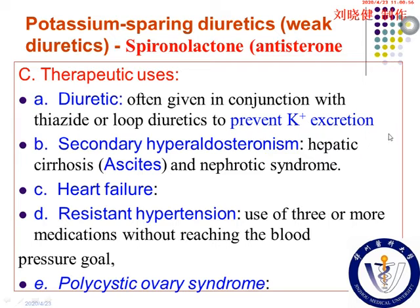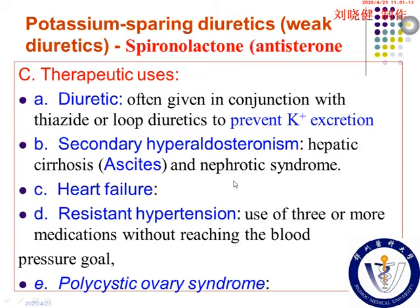It is often given in conjunction with thiazide diuretics or loop diuretics to prevent potassium excretion. This is a relatively common use. Second, it is also used for secondary hyperaldosteronism. For some patients with relatively high levels of aldosterone in the body, like hepatic cirrhosis and nephrotic syndrome.